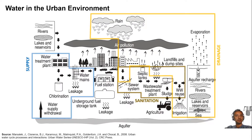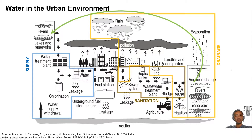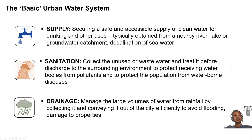The third component is drainage. While we have a fairly controlled system for collecting and disposing of water, it's complicated by rainfall in our cities, bringing much more water to deal with. With increasingly sporadic rainfall patterns, we need to protect cities from flood hazards and pollution from traffic and urban activities. The urban water system thus comprises supply, sanitation, and drainage.